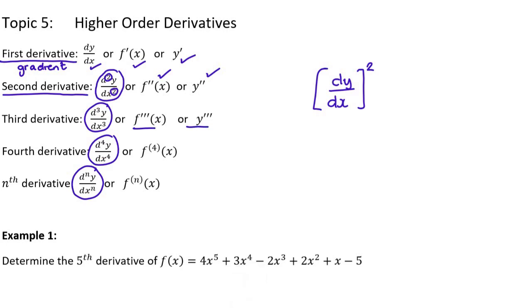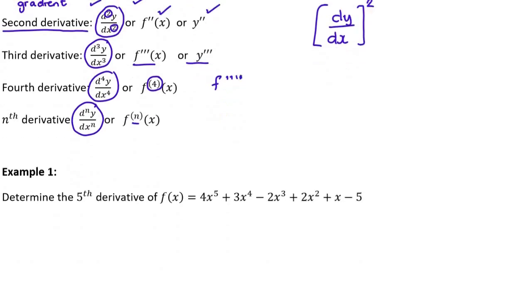And then you'll see after the third derivative we start with a bracket, dash dash dash in a bracket. Then after three you'll see it written in a bracket. It's not f to the power of four, that's why it's in a bracket. It's a notation. So that's just a notation thing.